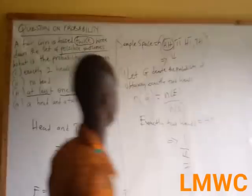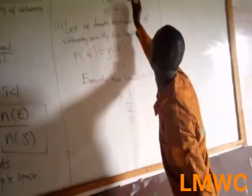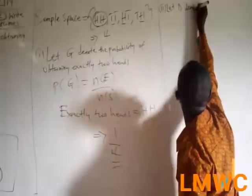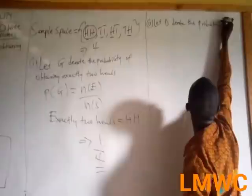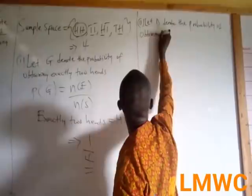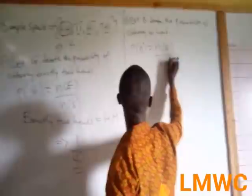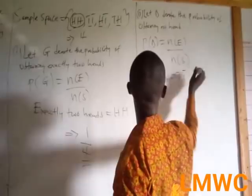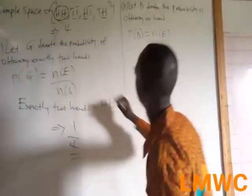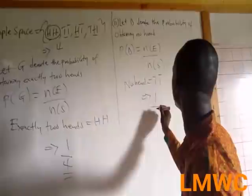The second sub-question: no Head. We have a Head in HH, HT, and TH, but no Head in TT only. So let D denote the probability of obtaining no Head. It becomes number of events over number of sample space. No Head — that's TT — is one event. The total sample space is four. So no Head is one over four.